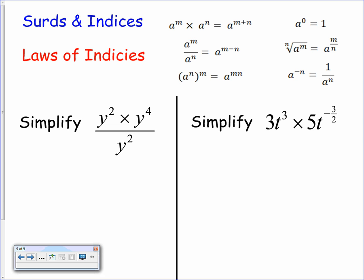On the numerator, we have y squared times y to the power of 4. When we multiply two terms together, we simply add the powers. So that gives us y to the power of 6 divided by y to the power of 2. That's rule number one. Now the second rule says that when we divide two terms, we subtract the powers. So y to the power of 6 divided by y to the power of 2 is y to the power of 4. That's your final answer.